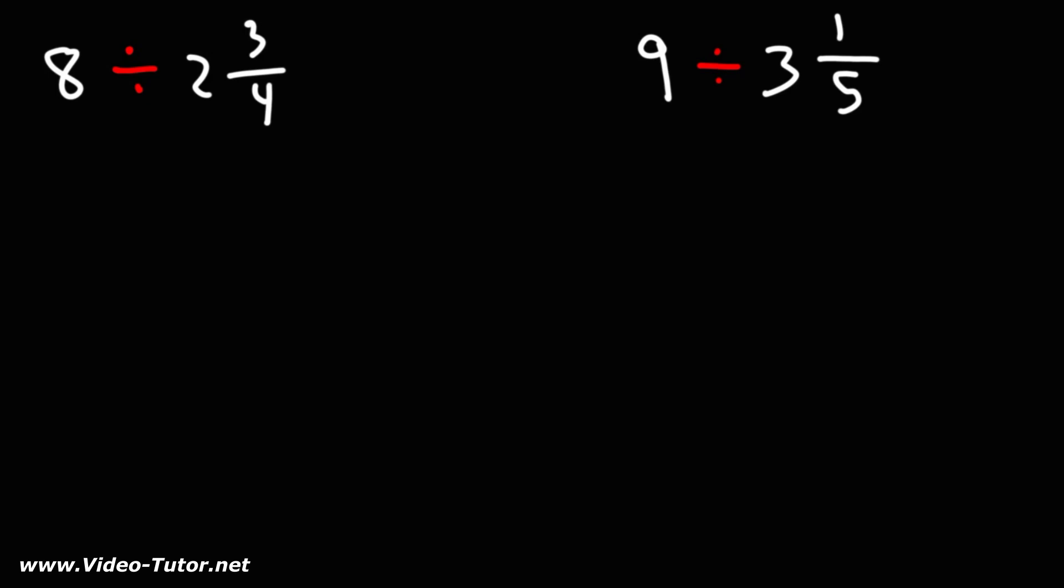In this video, we're going to talk about how to divide a whole number by a mixed number. First, we're going to write the whole number as a fraction, 8 over 1. The mixed number, we're going to convert it to an improper fraction.